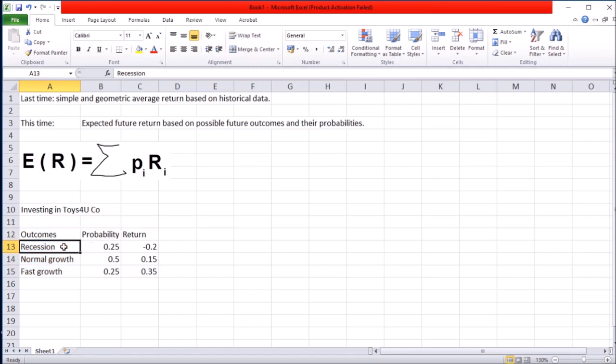There might be a recession, there might be normal growth or there might be fast growth in future and these outcomes have these probabilities. A recession is 25% chance likely, 50% chance for normal growth, 25% chance for fast growth.